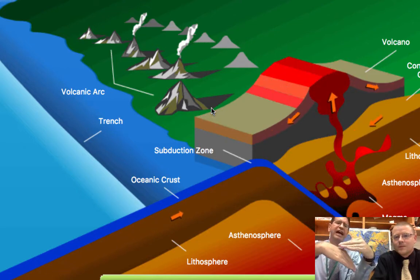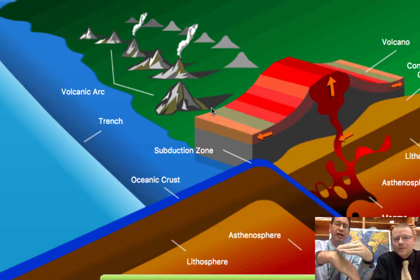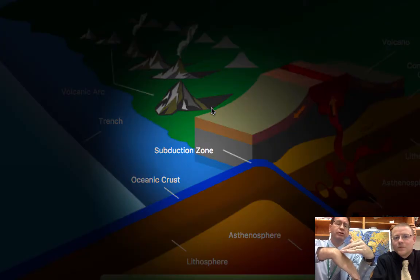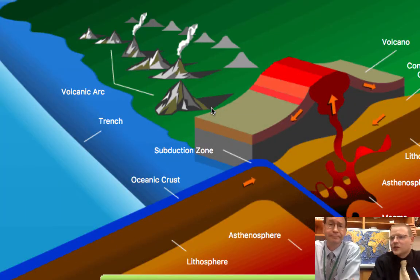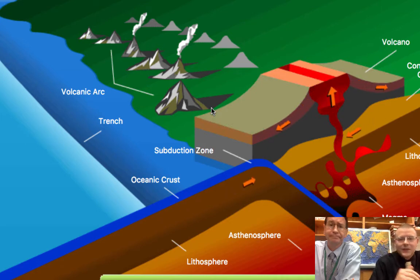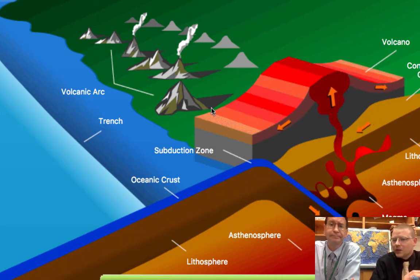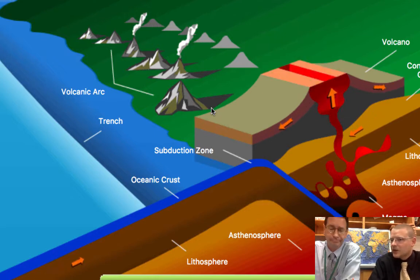So the ocean crust dives underneath, creating something called a trench or a subduction zone. When one plate gets pushed down onto the other, the more dense material sinks. You can see that magma is formed by that crust — that solid rock — heating up and liquefying.